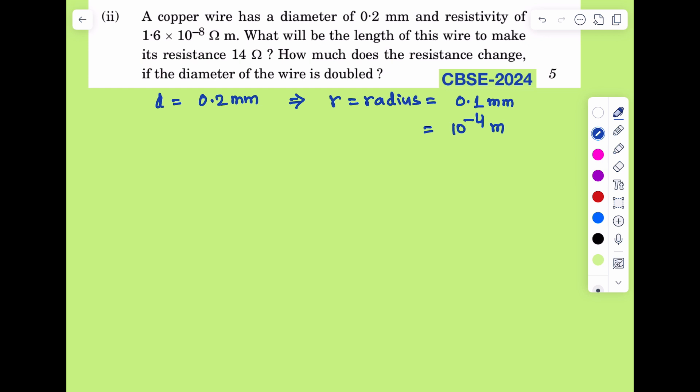And resistivity of the wire is 1.6 into 10 to the power minus 8 ohm per meter. That means rho is equal to 1.6 into 10 to the power minus 8 ohm into meter.